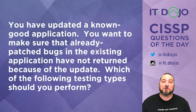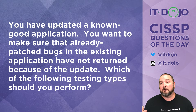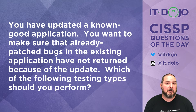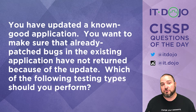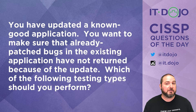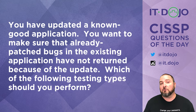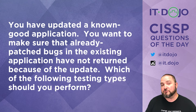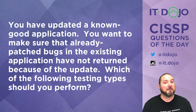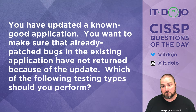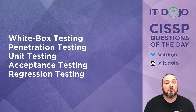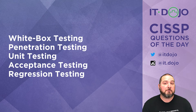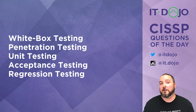Question number two: you have a known good application which you have just updated, and you want to make sure that the updates you've made don't actually bring old bugs back to life. What kind of testing would you do in order to look for such a thing? Go ahead and check out the answer choices. Click pause if you need to, and when you're ready click play and we'll talk about the right answer.